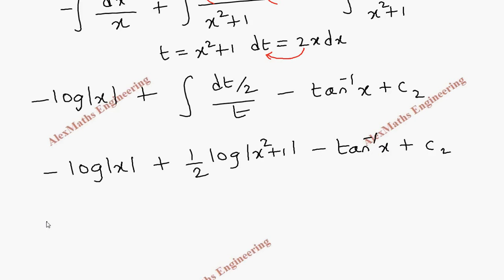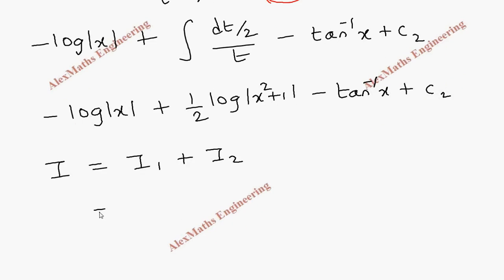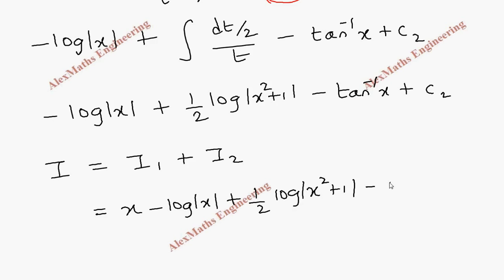Now I am going to combine both answers. So I equals I1 plus I2. I1 gave us x, and copying the rest of the terms we have x minus log|x| plus one-half log(x² plus 1) minus tan⁻¹ x plus C, where C1 and C2 are combined into a single constant C.